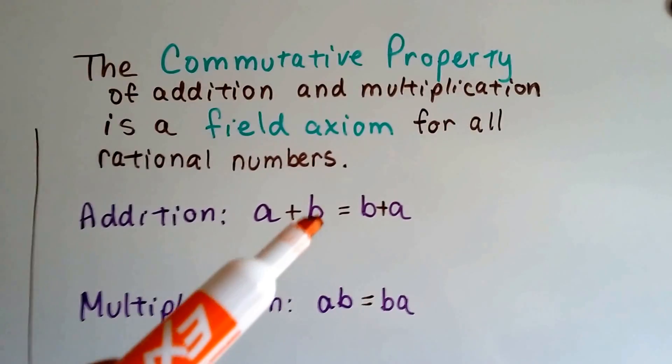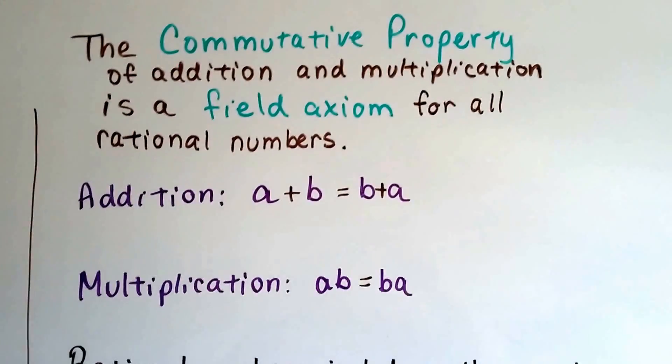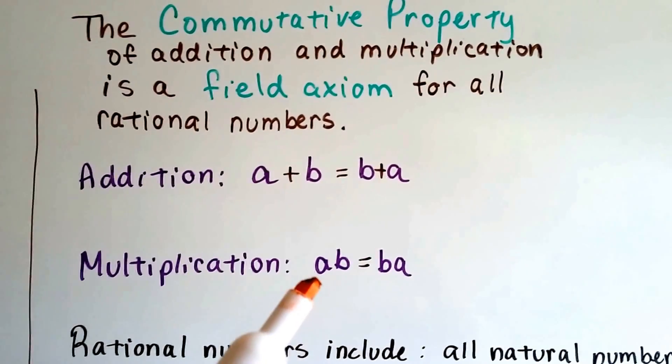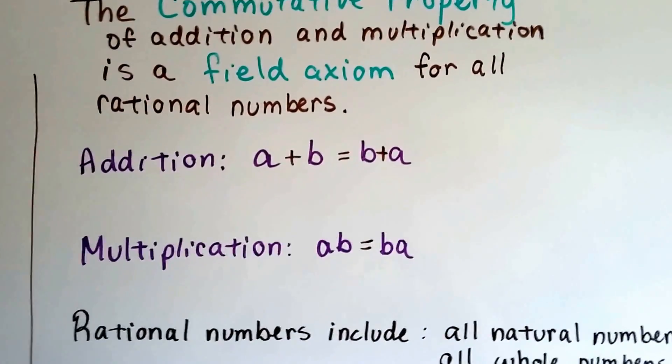So the commutative property of addition says a plus b is going to equal b plus a. If we add two plus three, it's going to equal three plus two. And it works for multiplication. Two times three is going to equal three times two, isn't it?